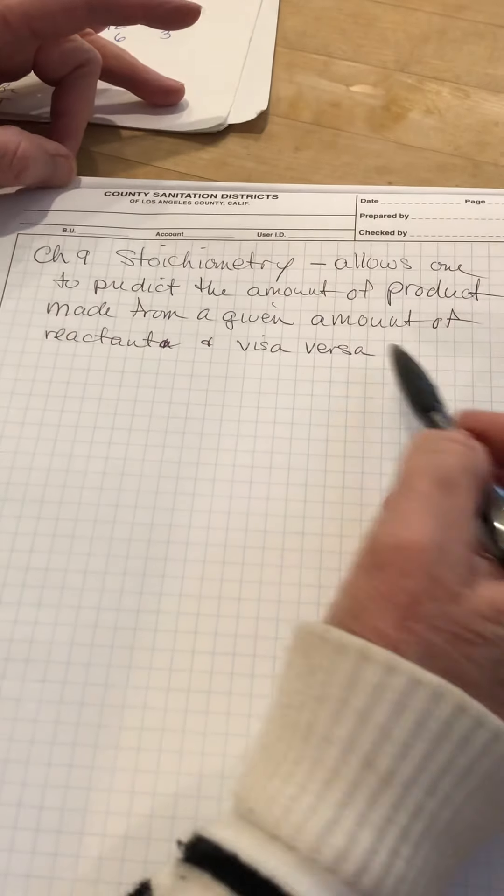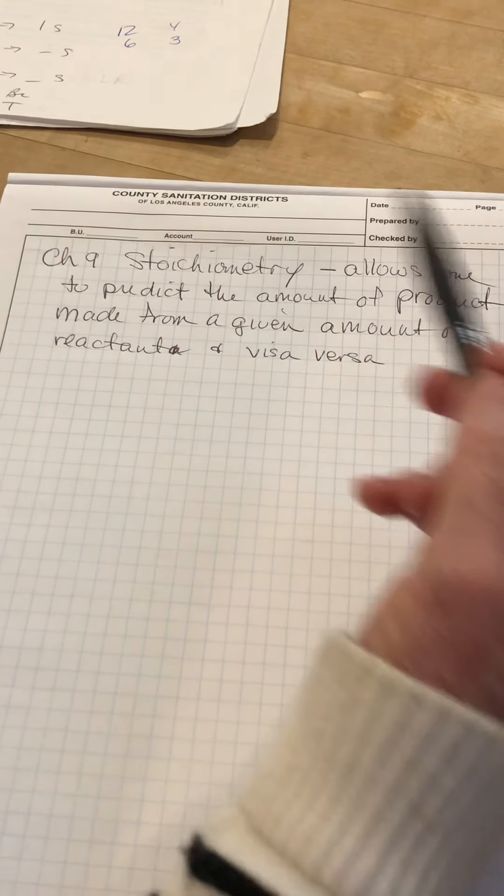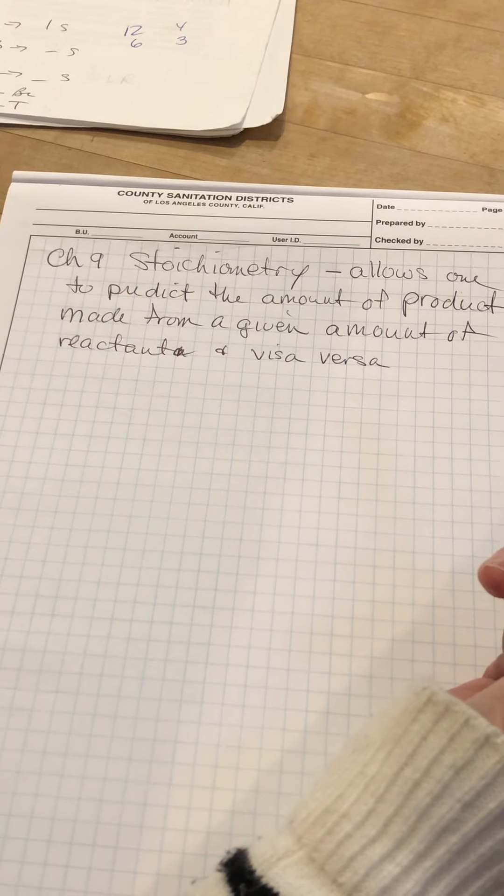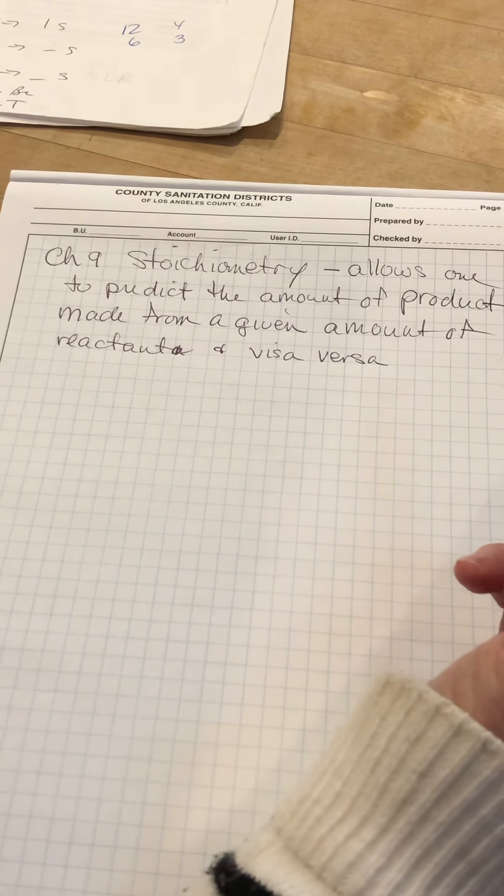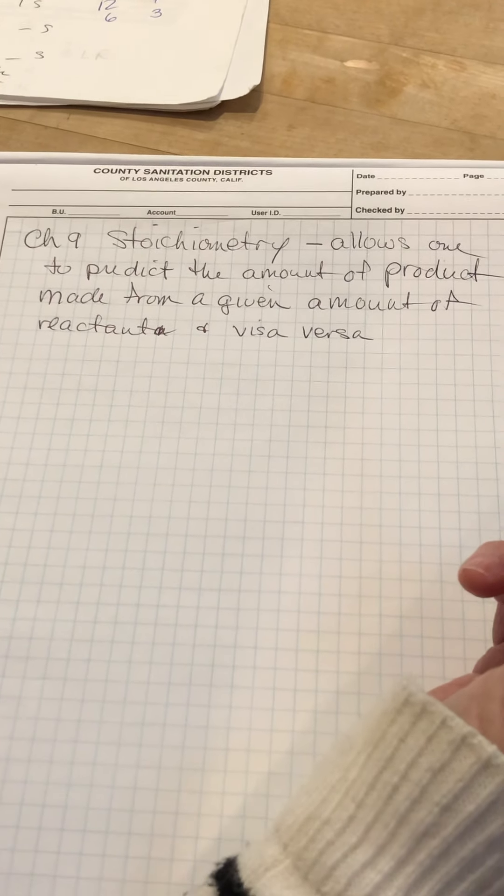If you know how much product you need, you can figure out how much reactant you need to make that. Now, I generally start out with a really boring food example. And when you get confused, I really recommend that you go back to the boring food example.